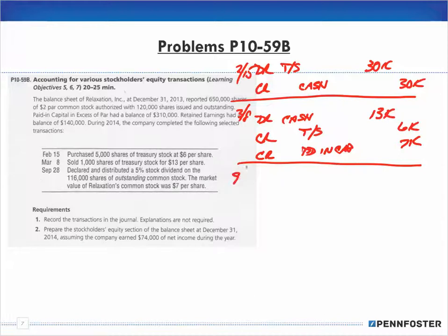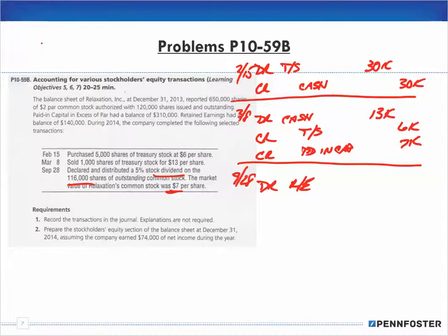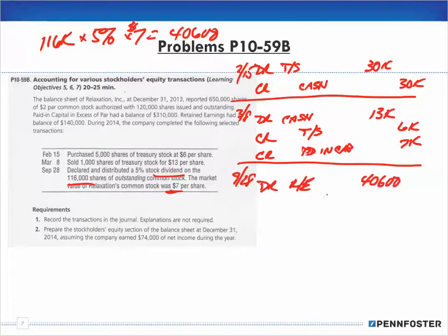On September 28th, declare and distribute a 5% stock dividend on 116,000 shares of outstanding common stock. The market value is $7 per share. We debit retained earnings: 116,000 shares times 5% times $7 equals $40,600. So we debit retained earnings $40,600.